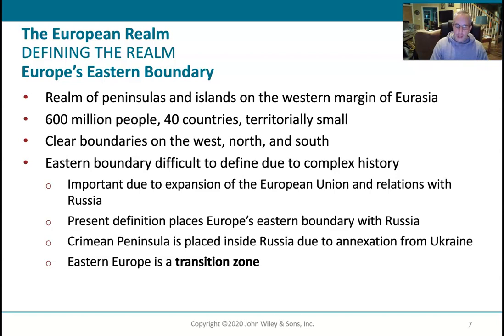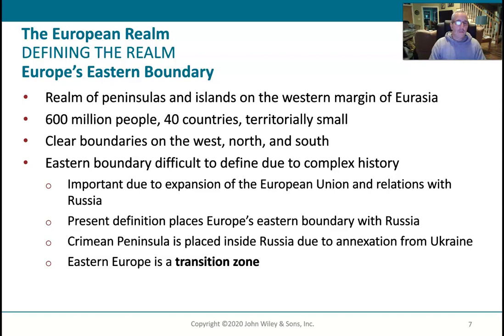Europe has pretty clear boundaries on most sides, but where it touches Asia it's not so clear. They call it a realm or a continent of peninsulas — it's the westernmost peninsula of Eurasia. The whole thing is really a peninsula, but there are also individual smaller peninsulas on it, which we'll see in just a few minutes.